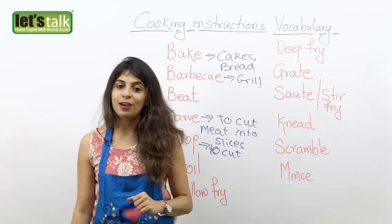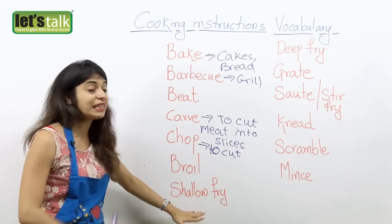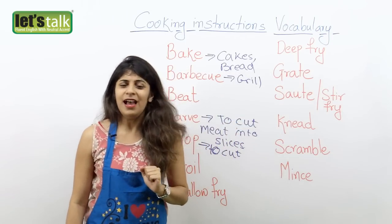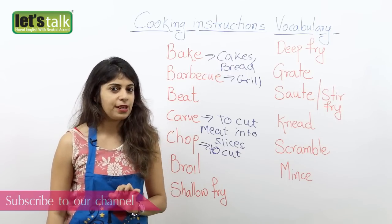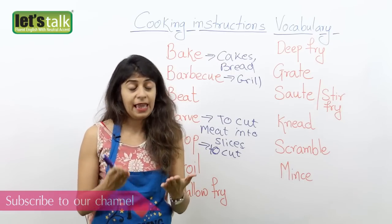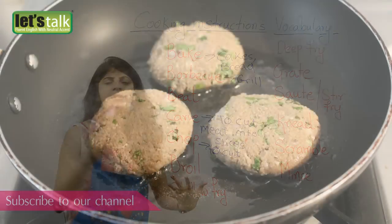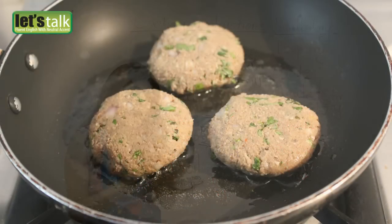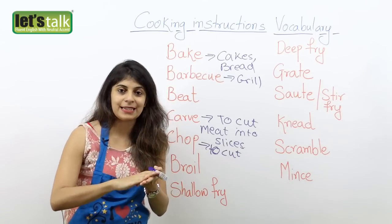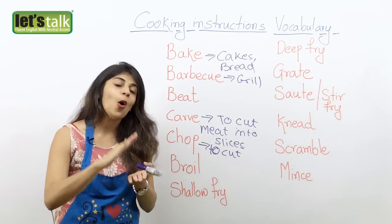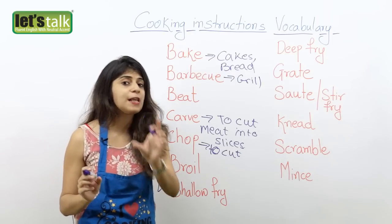Then another one is shallow fry. When I started learning to cook, I used to get confused between these two words — shallow fry and deep fry. Both cooking techniques are oil based. Shallow fry is when you put battered food — like battered meat, fish, or potatoes — and you submerge the food partly. You do not fill up the pan with lots of oil. It's very little oil, and you cook it only till it gets a little brown. So that is shallow fry.